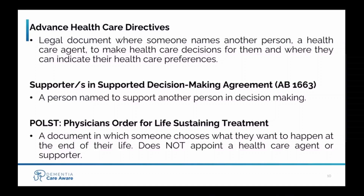Another type of health care decision-making tool is the POLST — the Physician Order for Life-Sustaining Treatment. This document is appropriate for those nearing the end of life with serious illness or frailty. It's a medical order and can only be completed by a licensed medical professional. This gives orders around specific medical interventions at the end of life. Critically, it does not name an agent for health care decisions. This form is often bright pink. A patient can name trusted people to act as health care agents or supported decision-makers — these trusted people don't need to be family.